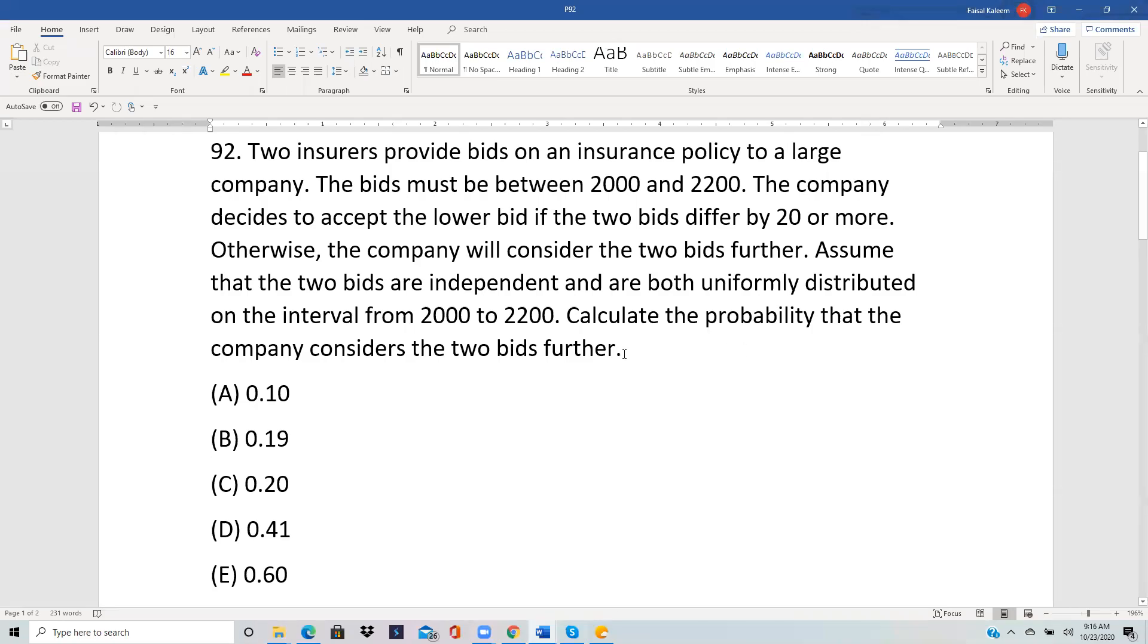Two insurers provide bids on an insurance policy to a large company. The bids must be between 2000 and 2200. The company decides to accept a lower bid if the two bids differ by 20 or more. Otherwise, the company will consider the two bids further. Assume that the two bids are independent and both uniformly distributed from 2000 to 2200. Calculate the probability that the company will consider the two bids further.